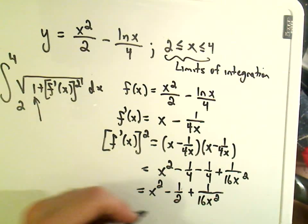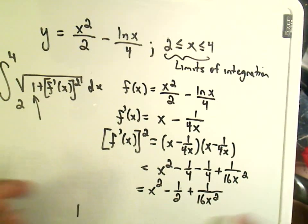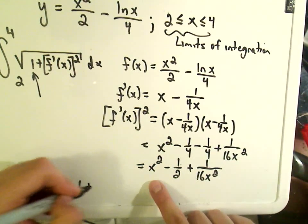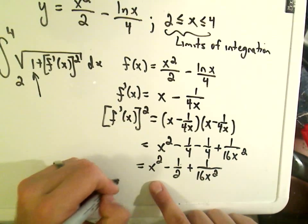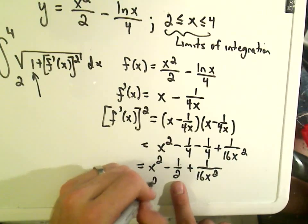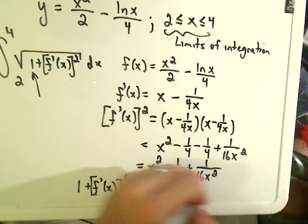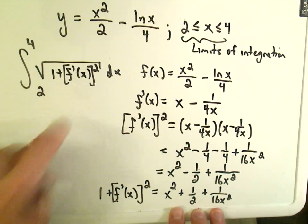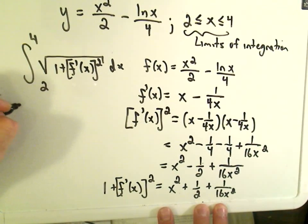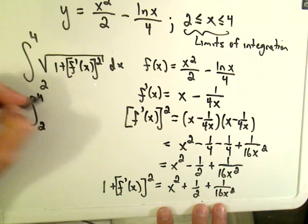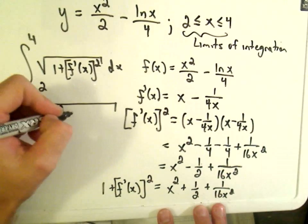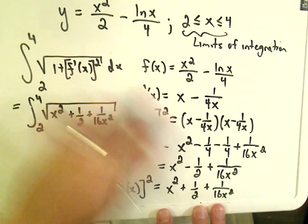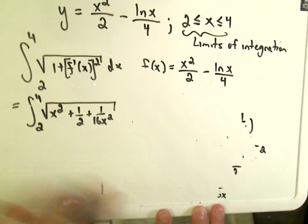This is just the derivative squared. Remember, we need to add 1 to that. If I add 1 to this, 1 plus f prime of x quantity squared, if I add 1 to the negative 1 half, I'm going to get x squared plus 1 half plus 1 over 16x squared. This is what all goes underneath the square root here in our example. We've got the integral from 2 to 4, the square root of x squared plus 1 half plus 1 over 16x squared, dx.